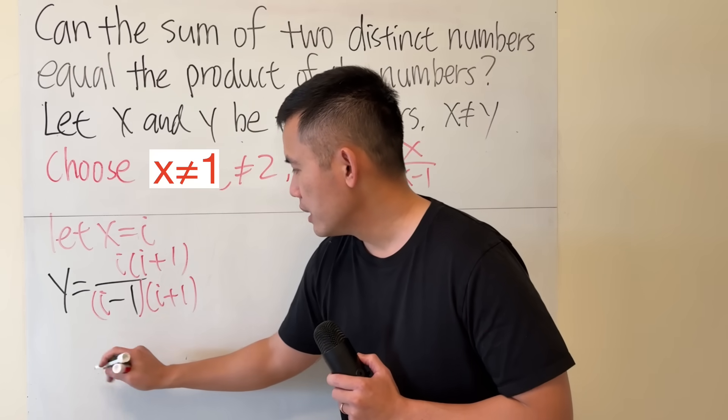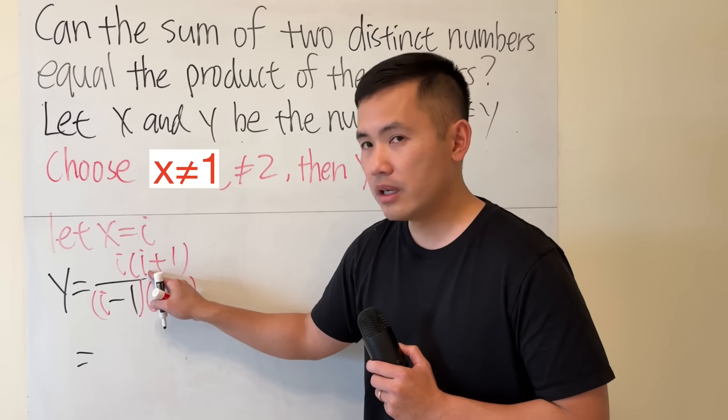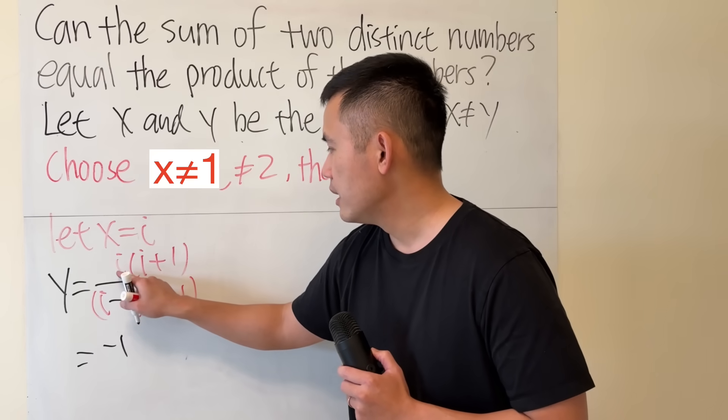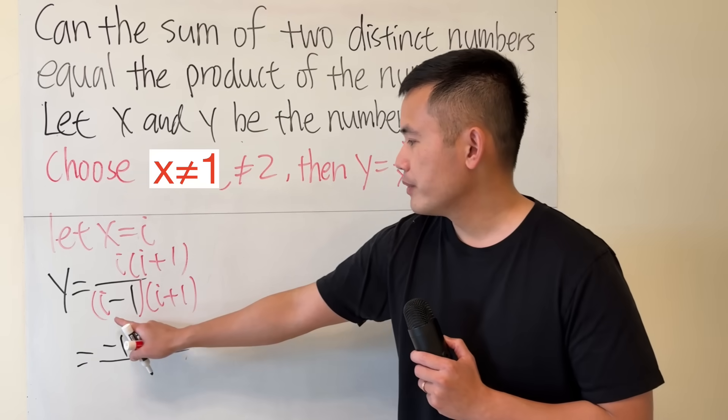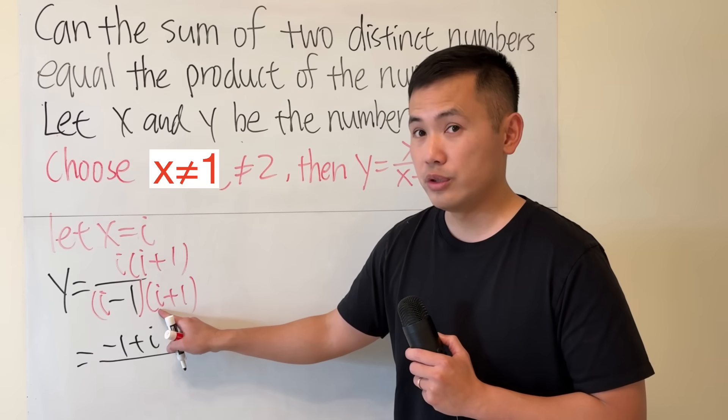Work this out real quick. On the top is i squared, which is negative 1, and then plus i.